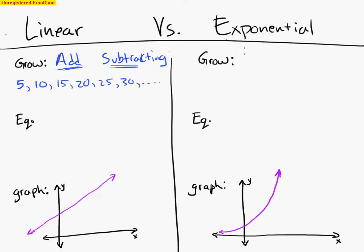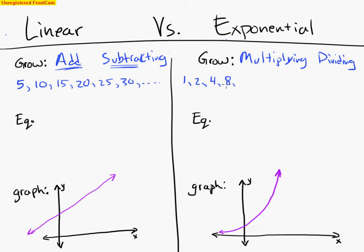Exponential functions, however, they grow by multiplying — or by dividing. So if I had an exponential sequence, I could start off with 1. Multiply by 2, I get 2. Multiply by 2, I get 4. Multiply by 2, I get 8. 8 times 2 is 16, 16 times 2 is 32, 32 times 2 is 64, 64 times 2 is 128, and I keep going like this. Every single time I'm multiplying by 2 in this sequence, and I start to grow faster and faster and faster.